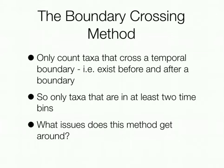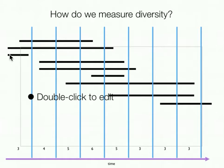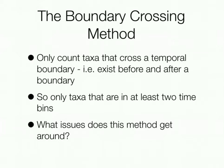One method used to address issues with simple bin counting is the boundary crossing method, where we only count taxa that cross a boundary — that is, taxa that exist before and after the boundary, appearing in at least two time bins. So instead of counting within bins, we're essentially counting at the lines. Think about what issues this method might get around versus regular bin counting — we'll come back to this in lecture and in lab.